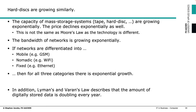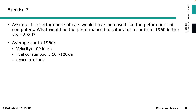The capacity of mass storage systems is growing exponentially, the bandwidth of networks is growing exponentially — at least when comparing mobile, nomadic, and fixed networks. Additionally, Lyman and Varian observed that the amount of digitally stored data doubles every year. Finally, let's make a comparison: is exponential growth really fast? Think about a car from the 1960s — take its key performance indicators and think about how fast a car or airplane would be today if it had experienced the same speed of development as computers.